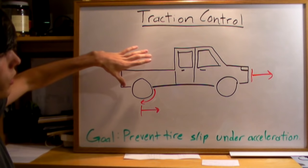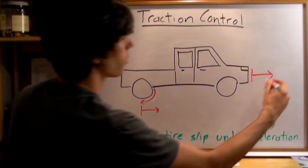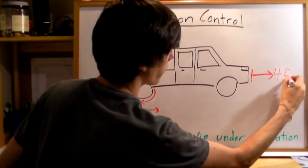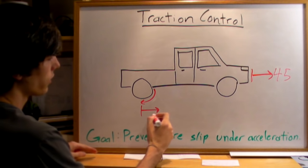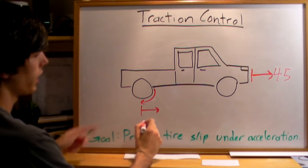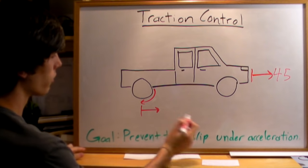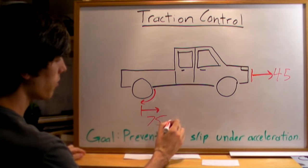So let's say we have a truck here and it's moving forward at 45 miles an hour. You press the gas and then all of a sudden this rear tire is spinning as if the tire would be moving forward at say 75 miles an hour.